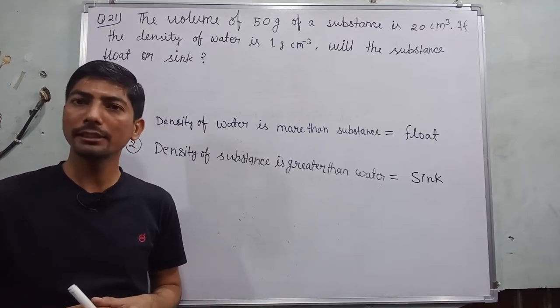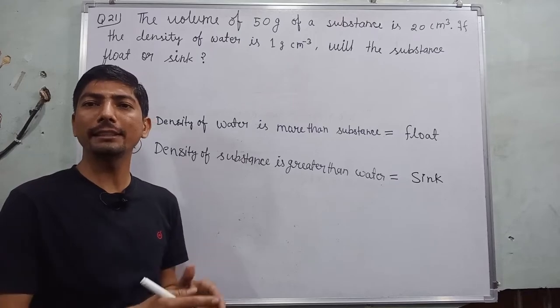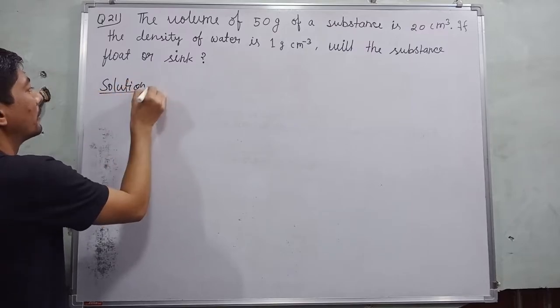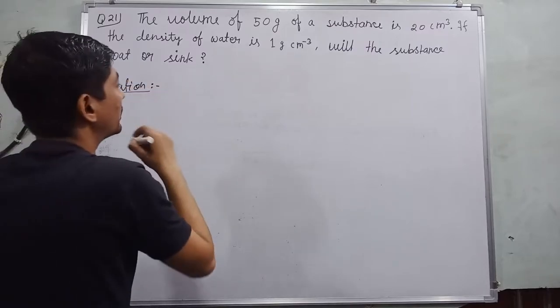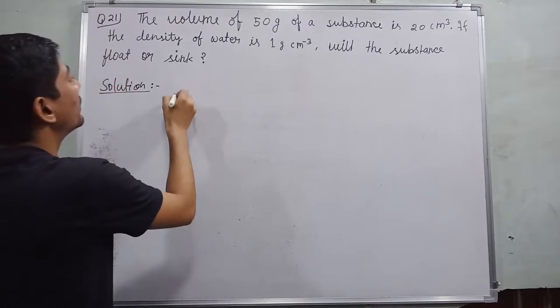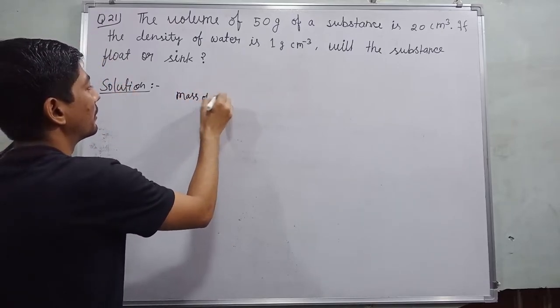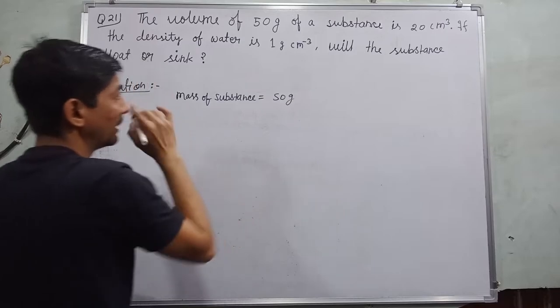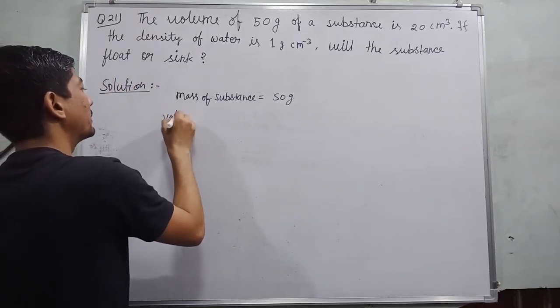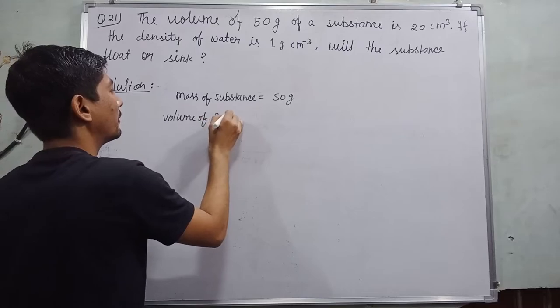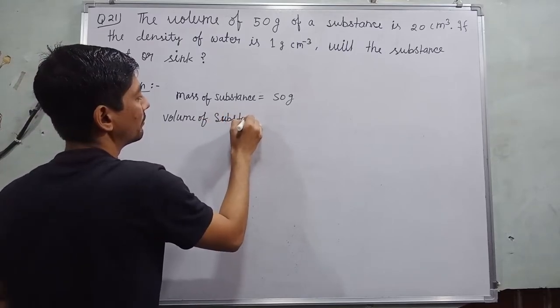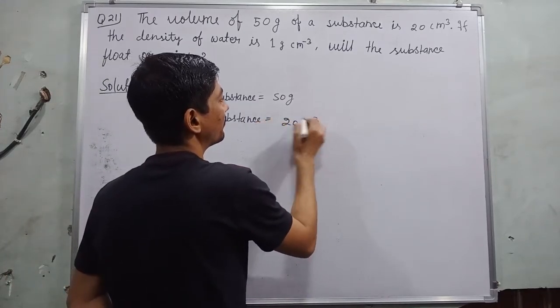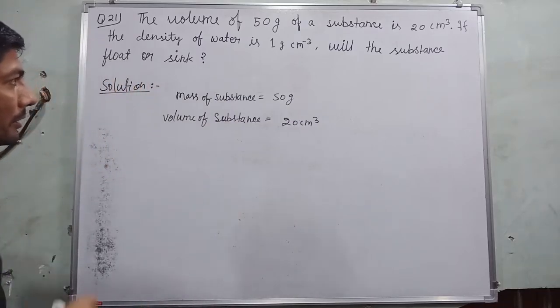Okay, so now we need to find out the density of substance and density of water. Solution: So given here mass of substance which is 50 grams and volume of substance which is 20 centimeter cube.